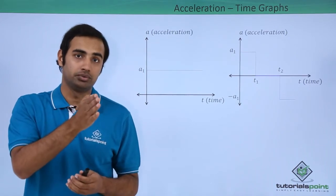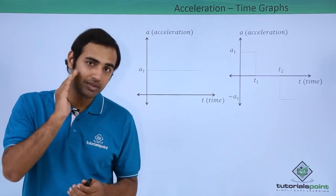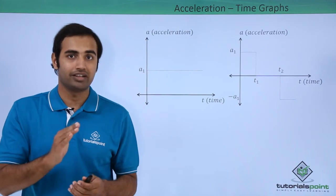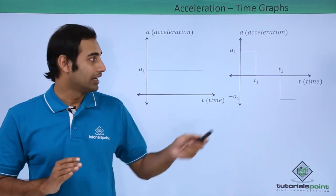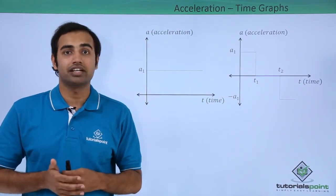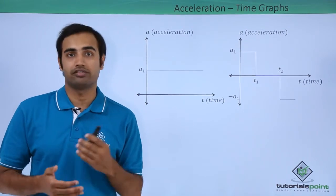After t1 and before t2, the acceleration of the object became 0, which means the object was travelling at a constant velocity. And then after t2, the object started to accelerate with value a1 in the negative direction.